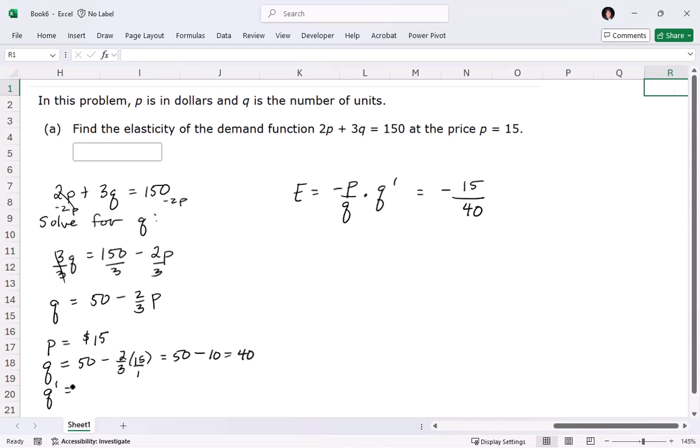And then q's derivative. This is where you really need to have it isolated for q. So to take the derivative of q would be the derivative of this. 50 goes to 0 because that's a constant. And then this is negative 2 thirds. So the value of the derivative is negative 2 thirds.